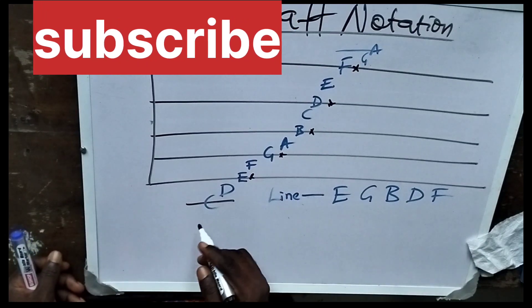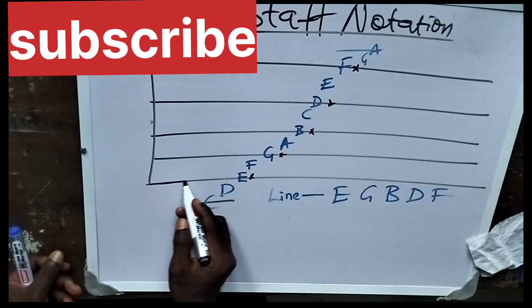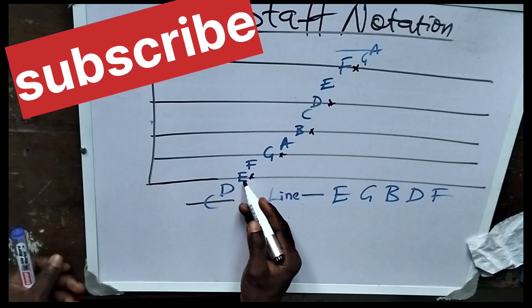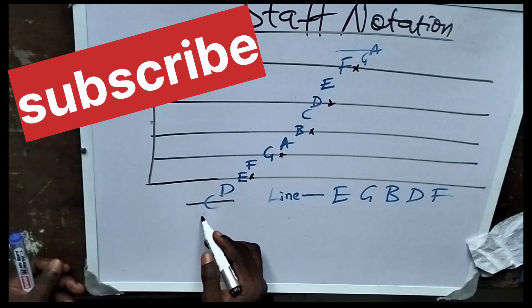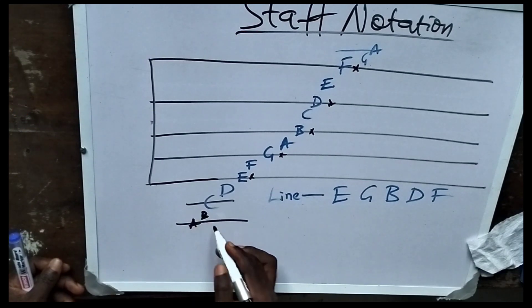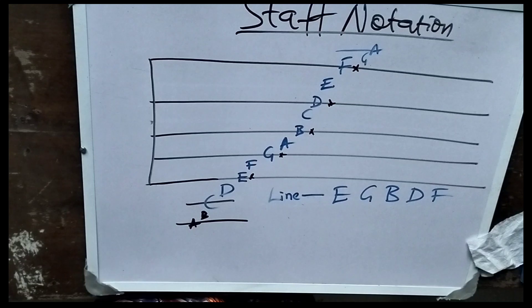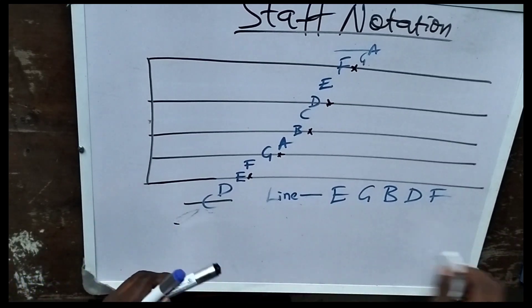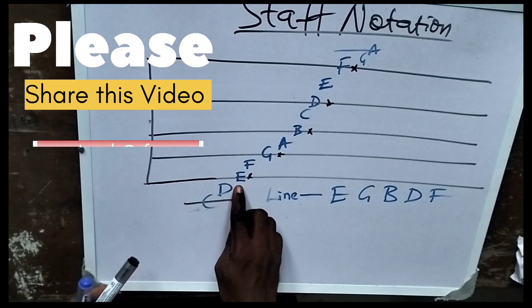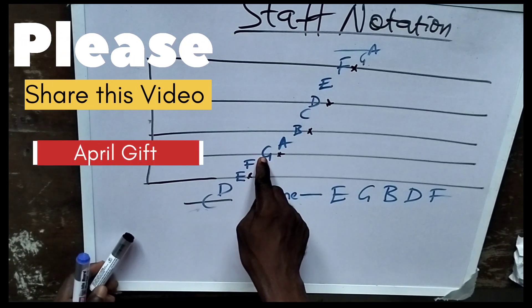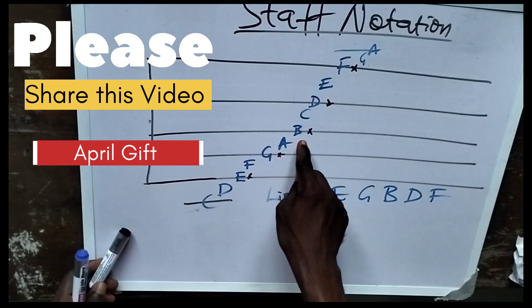Just know that the first line in the stave is E. If you want to go down from E: D, C — then here will be B, and another ledger line will be A. Just master it that the first line is E, the next space is F, the next line is G, the next space is A, the next line is B.